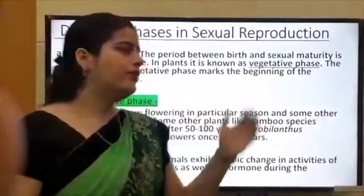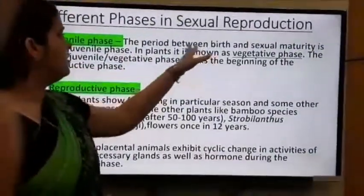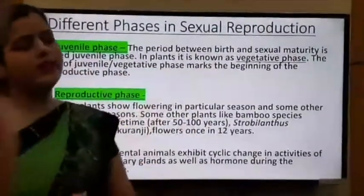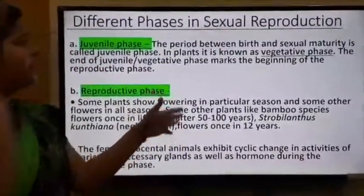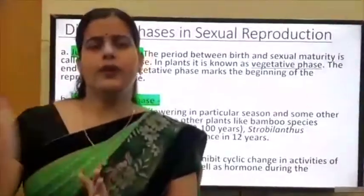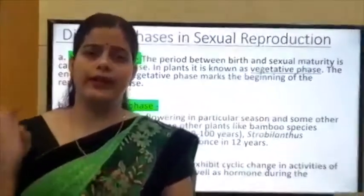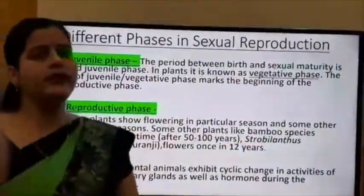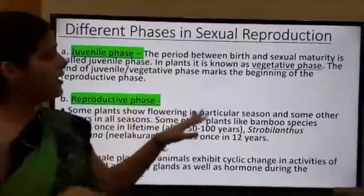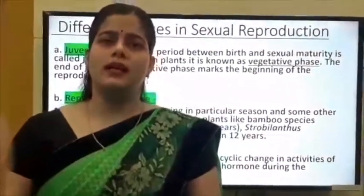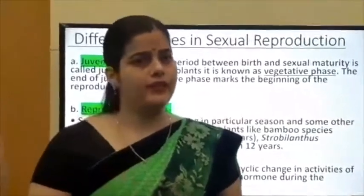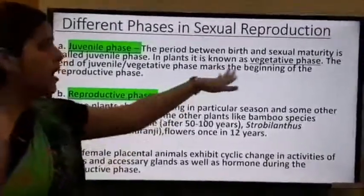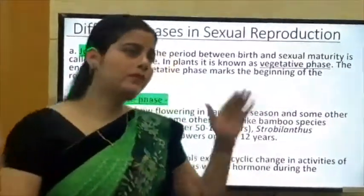The juvenile phase is the period between birth and sexual maturity. In plants it is known as the vegetative phase. The end of the juvenile or vegetative phase marks the beginning of the reproductive phase.